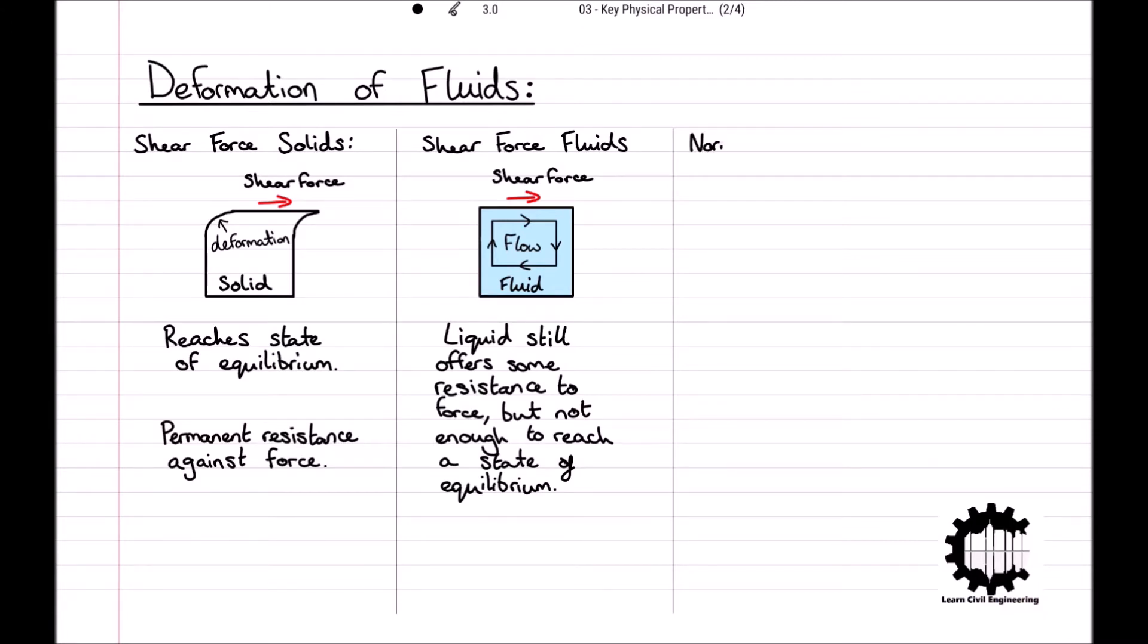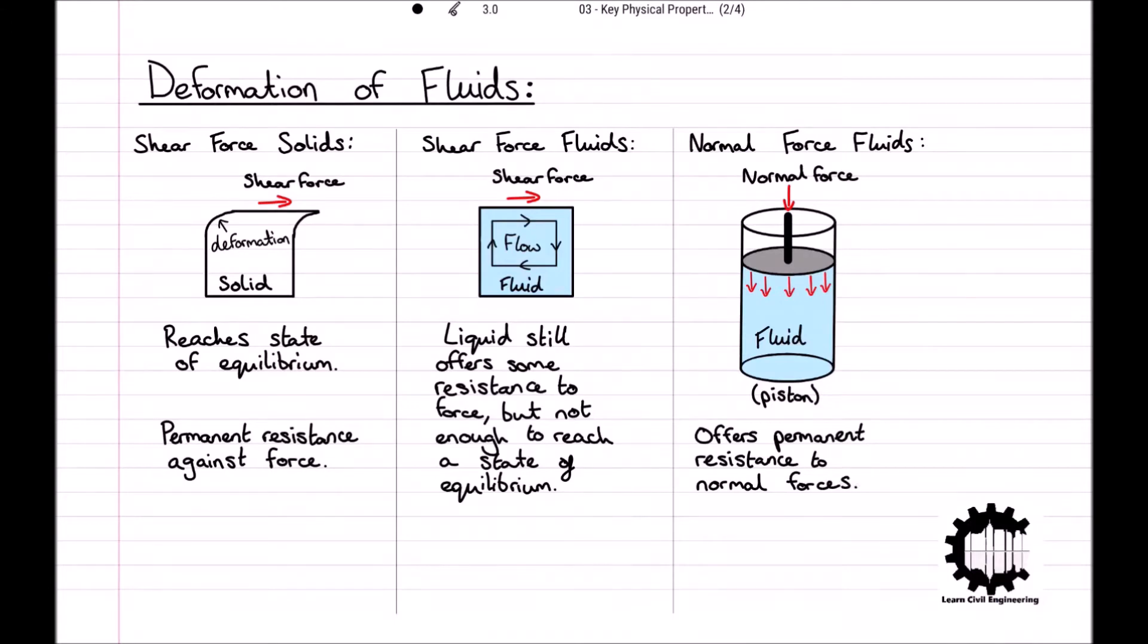Fluids are, however, able to offer permanent resistance to normal forces. For example, considering a simple fluid-filled piston, where the piston head is applying a normal force to the surface of the fluid, the fluid may compress a tiny amount, but that is of a fixed extent. That is, the fluid reaches a state of deformation where it is able to offer permanent resistance to the applied normal force, and no further compression occurs.